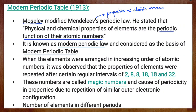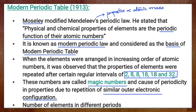Magic numbers are those numbers at which elements with similar properties are repeated: 2, 8, 8, 18, 18, and 32. The reason periodicity occurs — why at definite intervals elements with similar properties appear — is because of their similar outer electronic configuration. Once you write the electronic configuration for elements with different atomic numbers, you can identify the outer electronic configuration. If the outer electronic configuration is the same, those elements will have similar properties.